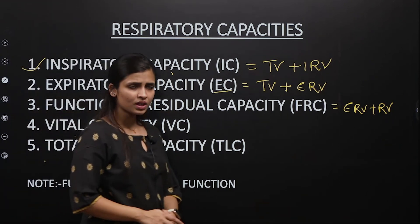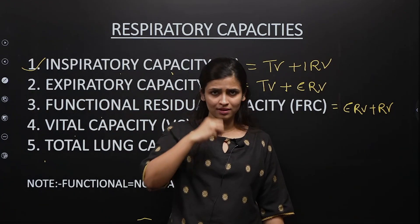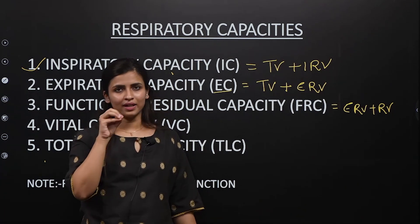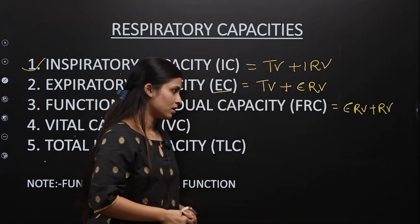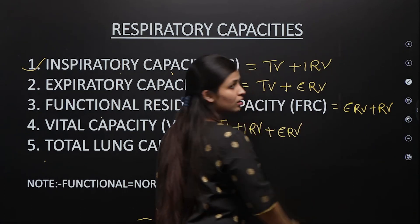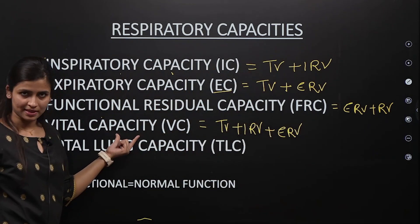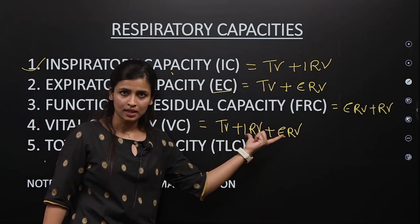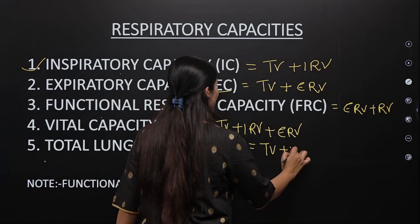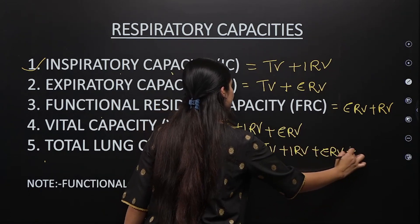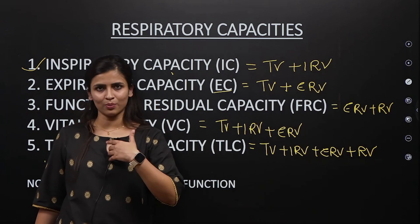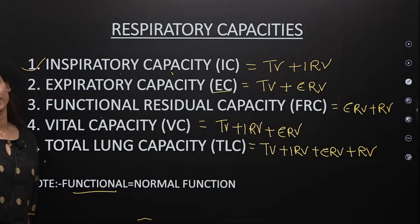The vital capacity is the volume of air you can inspire after a forced expiration. Since you have also expelled ERV, when you inspire again you will take in TV plus IRV plus ERV. So vital capacity equals TV plus IRV plus ERV. The total lung capacity is the total volume of air in the lungs after maximum inspiration, which equals TV plus IRV plus ERV plus RV. Functional residual capacity refers to normal functioning — after a normal expiration, the volume remaining is called functional residual capacity.